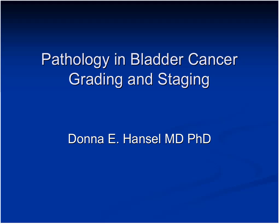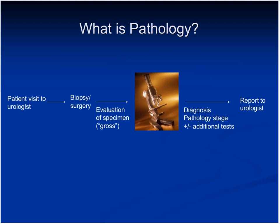Thank you all for attending. Today I'll be talking about pathology in bladder cancer grading and staging. Because a lot of people are not familiar with the field of pathology, I wanted to give a little bit of an overview of what we do. Typically when patients come in, you usually will see your urologist first, who will do cystoscopy and evaluate you clinically. A subset of cases are recommended to undergo biopsy, transurethral resection, or surgery. Once that specimen or tissue sample comes out, that's the point at which pathology steps in.